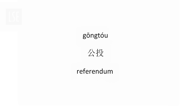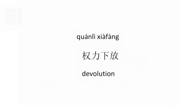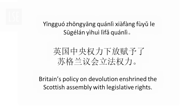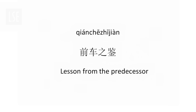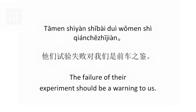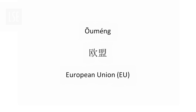公投 (referendum) — 苏格兰独立公投将于2014年9月18日举行 (The Scottish independence referendum will be held on 18 September 2014). 权力下放 (devolution) — 英国中央权力下放赋予了苏格兰议会立法权力 (UK central devolution granted legislative powers to the Scottish Parliament). 前车之鉴 (a lesson from others' mistakes) — 他们试验失败对我们是前车之鉴 (Their failed experiment is a lesson for us).